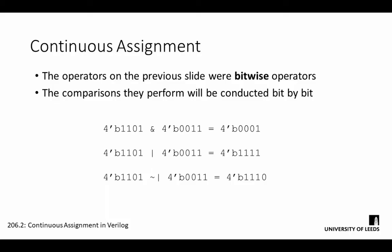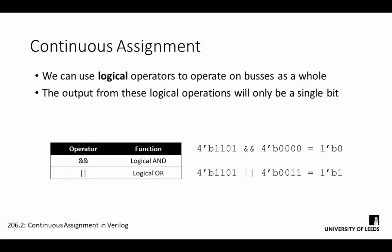If we want to validate a bus as a whole, we can use logical operators to compare entire terms to each other. Logical operators operate on multibit values as a single entity, and only produce a single bit output. Logical AND allows us to compare two buses to see if they're identical to each other, whereas logical OR would tell us simply if a bus has a non-zero value.